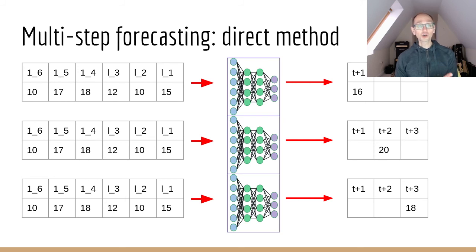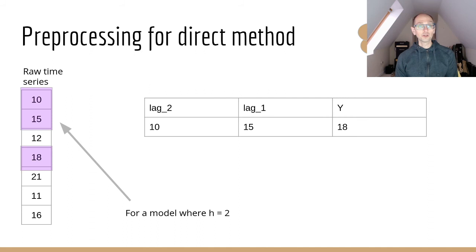It does change the way we work out our sliding window. If we take a model where h equals two, for example, our lag two would be 10, our lag one would be 15 in our first case, but we would skip the next value in the sequence and our y value would be 18. If we were building a forecasting model for the third step into the future, we would again use the same input data, but we would skip the next two sequence values, 12 and 18, and our y value would be 21. So we would build up an array that way.